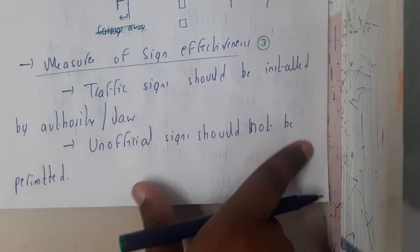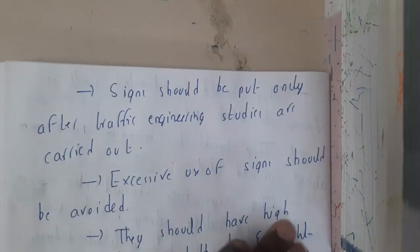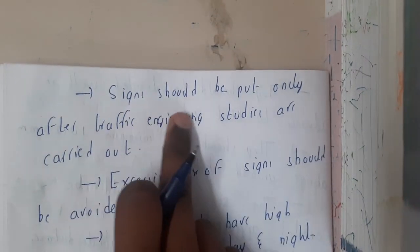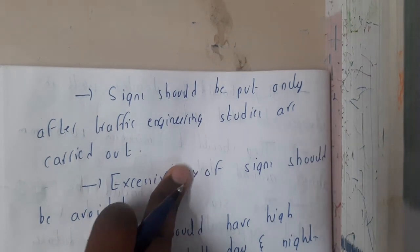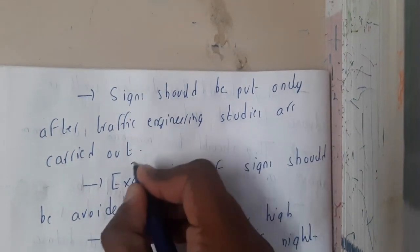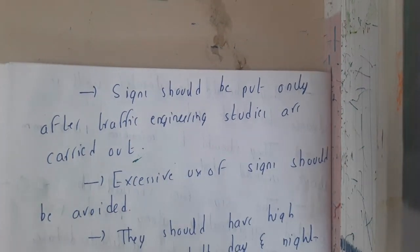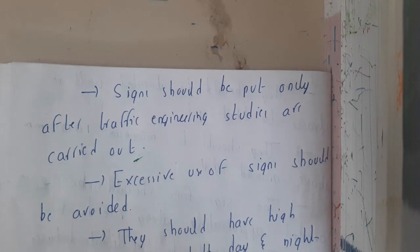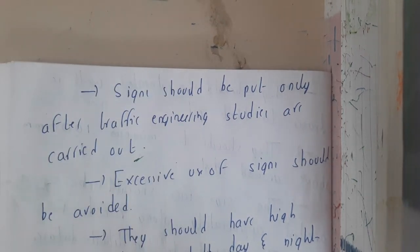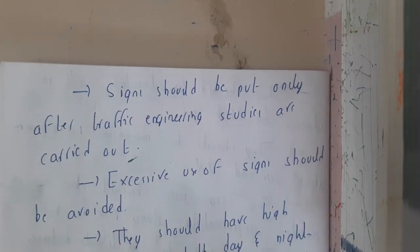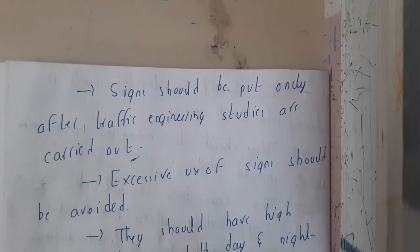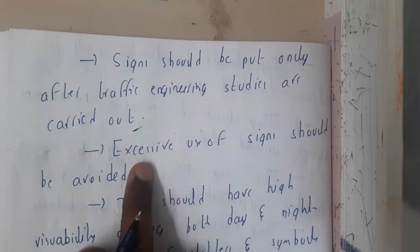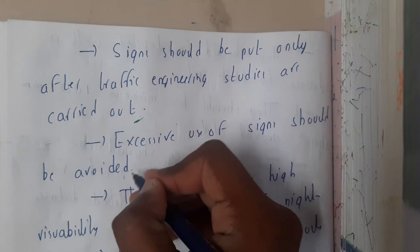Traffic signs should be installed by the authority or law. Unofficial signs should not be permitted — there is no allowance for unauthorized or unaccepted signs. Signs should be put only after traffic engineer studies are carried out. The traffic engineer will analyze whether there is any need for the traffic sign or not, and based on that only we need to keep it.